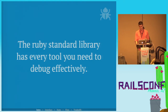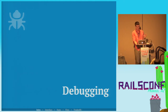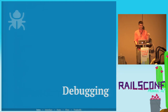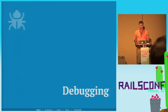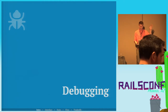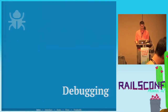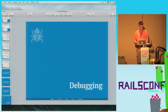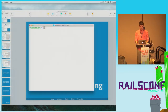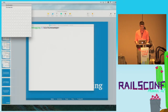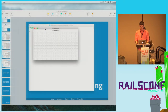First question you have to ask yourself: what kind of problem are you solving? I'm going to define three kinds: interface problems, state problems, and flow problems. I needed an example application to debug over the course of this talk, so I wrote a little Minesweeper. Is everyone familiar with Minesweeper? I'm going to show it to you — live demo time. Here's Minesweeper, it's in Ruby.